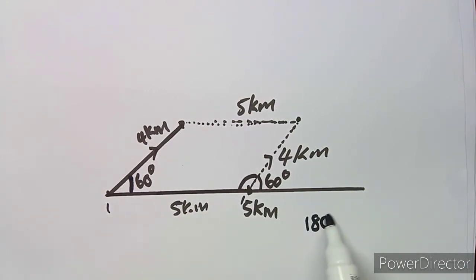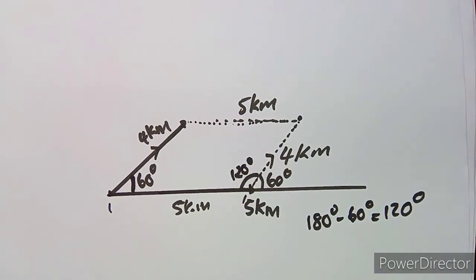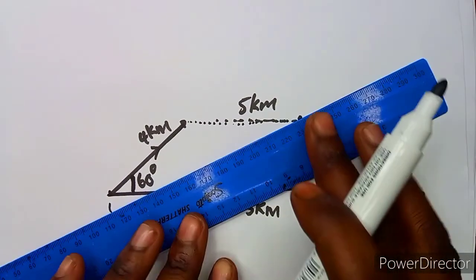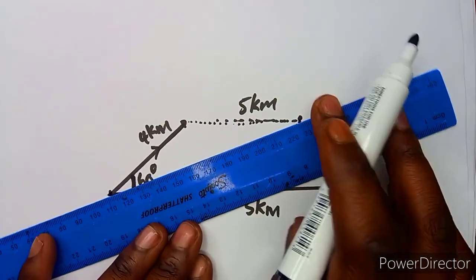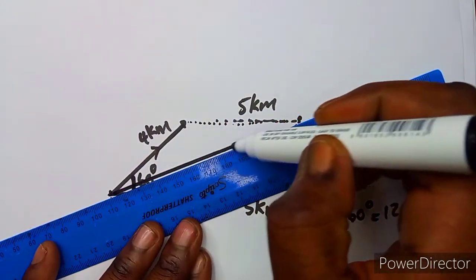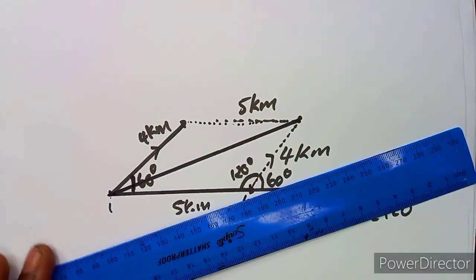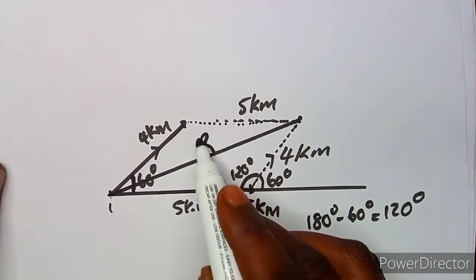Or you can take these co-interior angles which add up to 180 degrees, so you get 180 degrees minus 60 degrees which is 120 degrees. We need this angle because the resultant is the major diagonal — from this endpoint up to that endpoint. This major diagonal is your resultant using the parallelogram rule.